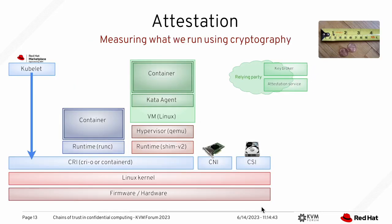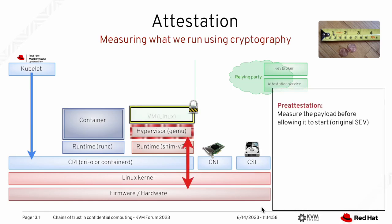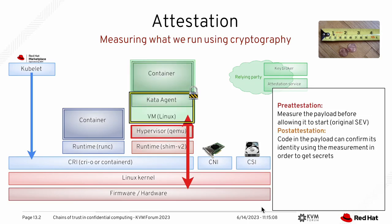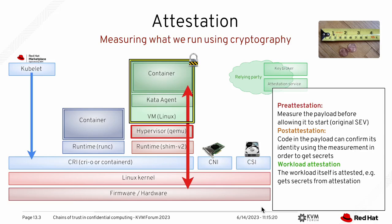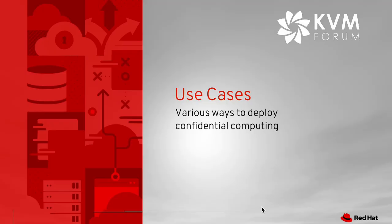When we apply that to our Confidential Computing case — using Confidential Containers as an example — we measure what we run using cryptographic tools. We can have pre-attestation, as in SEV old generation, where you measure the payload before allowing it to start. Or post-attestation, where the code in the payload can confirm its identity, which can include something much larger. That ultimately unlocks the secrets. You can extend this to the whole workload — only unlocking secrets if you know which workload is running.